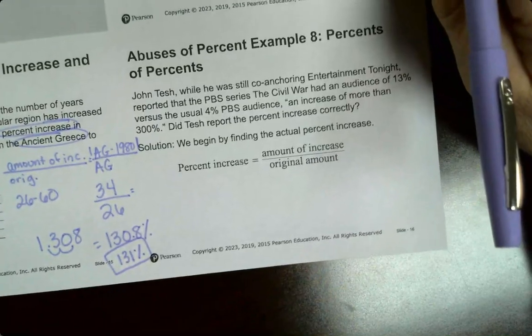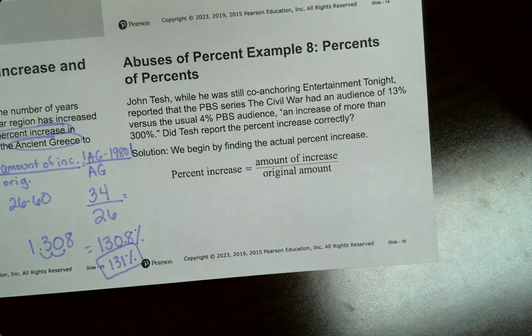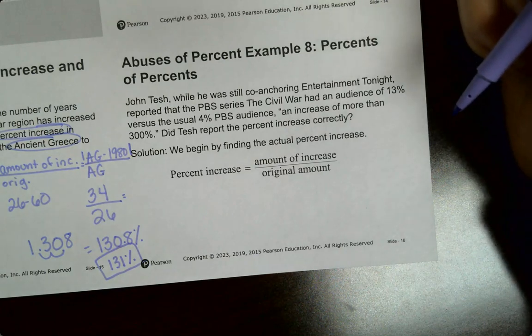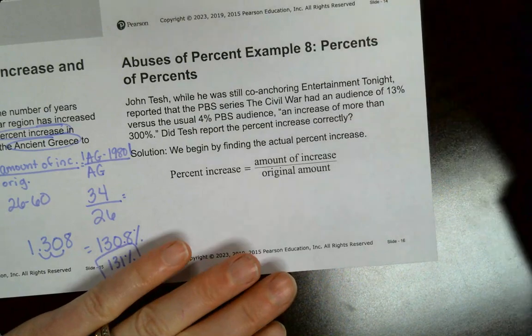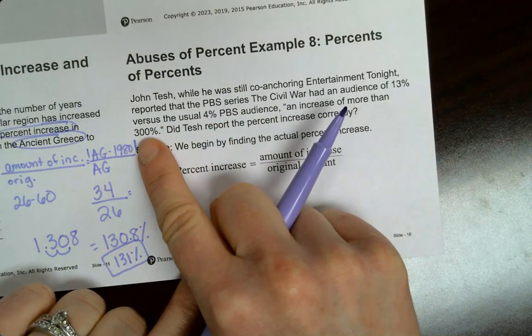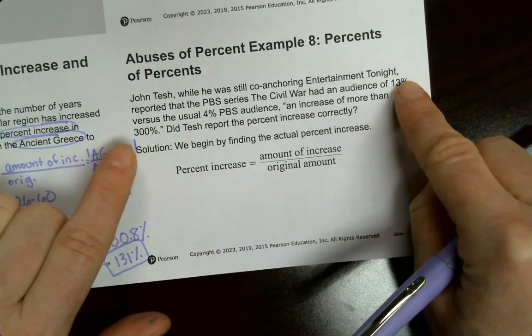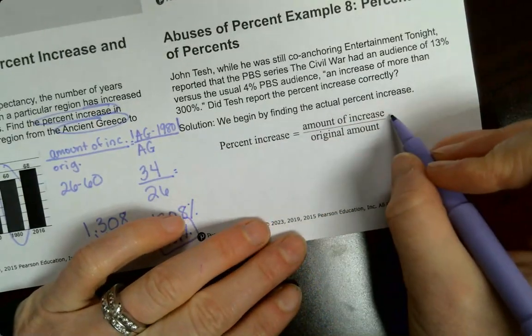The last example. Abuses of percent. John Tesh, while he was still at Entertainment Tonight, reported that PBS series of Civil War had an audience of 13 percent versus the usual 4 percent. An increase of more than 300 percent. Did he use it correctly? So he's saying you multiply the four times 3 and you get 12, which would be 300 percent. That's what he's saying. So let's see what the actual was. Amount of increase.